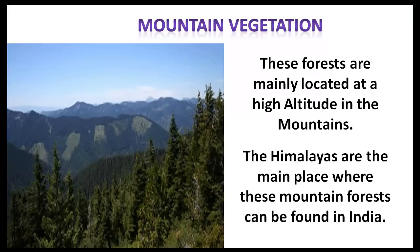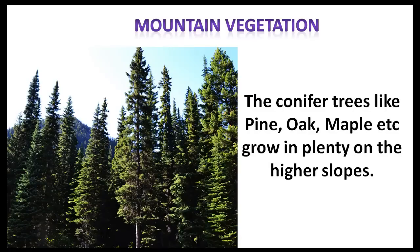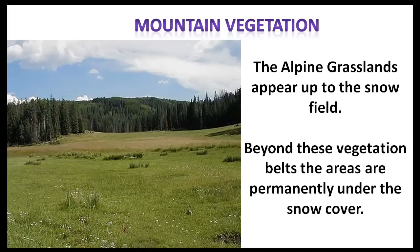Mountain vegetation is mainly located at high altitudes in the mountains. The Himalayas are the main place where these mountain forests can be found in India. Sal, teak, bamboo and cane grow abundantly here. The conifer trees like pine, oak, maple etc. grow in plenty on the higher slopes. The alpine grasslands appear up to the snow field. Beyond these vegetation belts, the areas are permanently under the cover of snow.